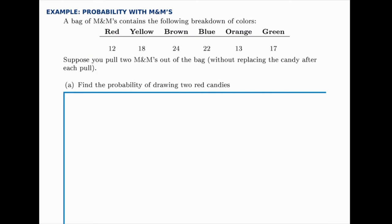First we want to find the probability that we'll draw two red candies, meaning we'll draw one and then in our second draw we'll also get a red candy. This is a multiplication rule problem where the two events are not independent. If we replaced the candy and reshuffled the bag they would be independent, because the probability on each draw would be consistent. But because we hold that first one out before we grab the second one, the events are not independent, so we have to think carefully about each situation.